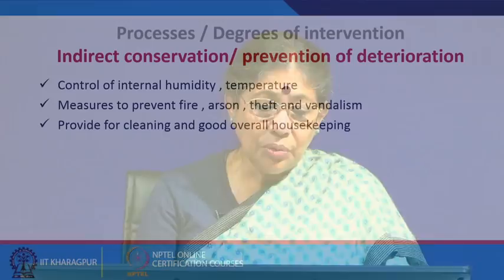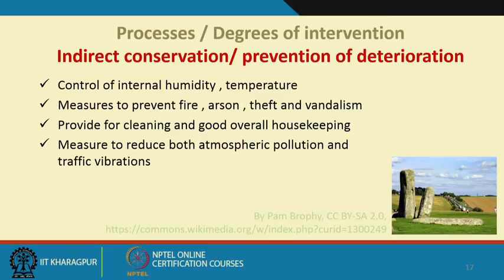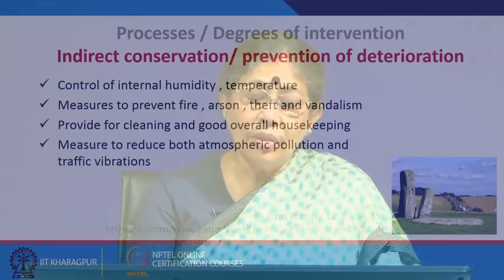Measures can also be taken to reduce atmospheric pollution and traffic vibration. Stonehenge, a World Heritage Site, had a highway very close to it causing vibration, creating problems for visibility and the overall environment, as well as threatening archaeological remains. There has been a great movement to address this, and the highway has now been shifted away from Stonehenge. All these things come under the first step — indirect conservation and prevention of deterioration.